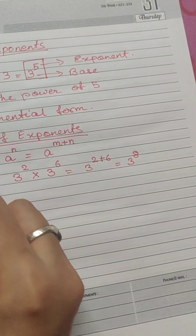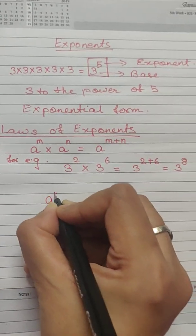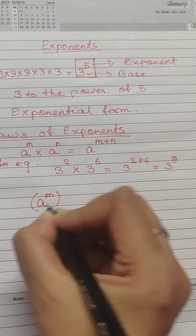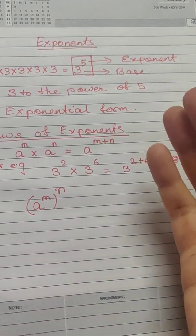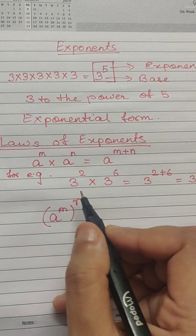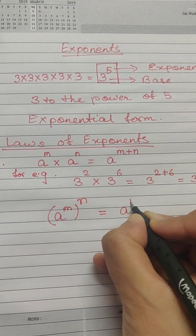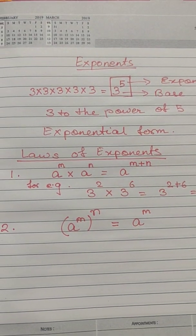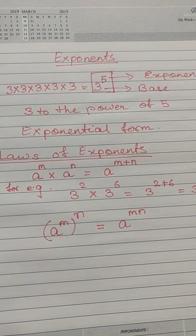The second law states that if a to the power of m is raised to another exponent, that is a to the power of m to the power of n, in that case, again, we keep the base as it is and we multiply the exponents.